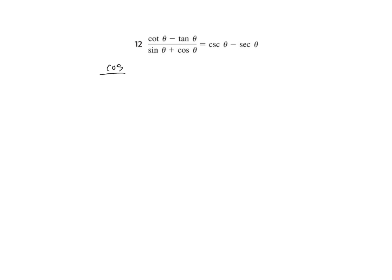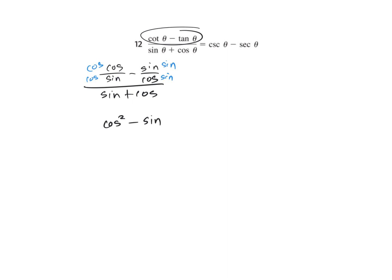Let's break it down further. Cosine over sine is cotangent, and sine over cosine is tangent. The top part over sine plus cosine. Multiply by a common denominator to get cosine squared minus sine squared all over sine cosine, and that is all over the denominator sine plus cosine.